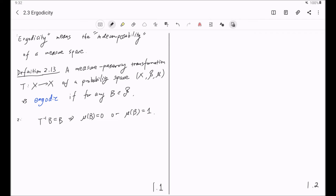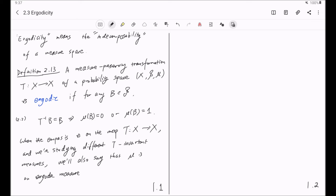This is equation 2.2 in the book. And this is what I mean by the indecomposability. And there are some other ways to say this. For example, when the emphasis is on the map, T from X to X, and we are studying different T-invariant measures, we will also say that Mu is an ergodic measure for T.